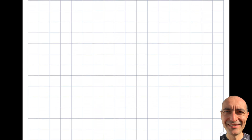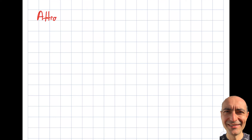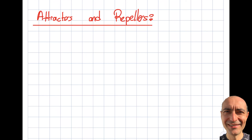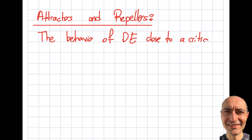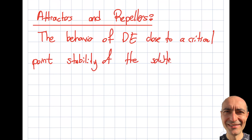There is one more topic I want to discuss: Attractors and Repellers. The behavior of the differential equation close to a critical point will determine the stability — asymptotic stability of the solution. This is applicable not only for first-order DEs, but also for both PDEs and ODEs, and for higher-order DEs as well. I'm looking at the slope and arrows from the phase portrait and will make comments about it.